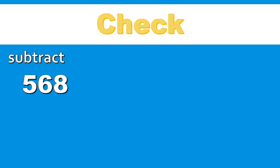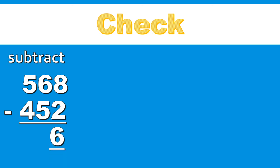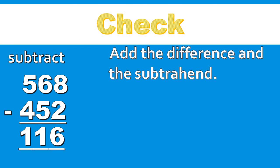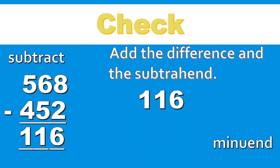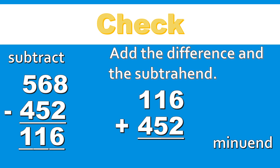Let's do another example. 568 subtract 452. 2 ones from 8 ones leaves 6 ones. 5 tens from 6 tens leaves 1 ten. 4 hundred from 5 hundred leaves 1 hundred. Our difference is 116. To do the check, add the difference and the subtrahend. 116 plus 452. 6 ones plus 2 ones is 8 ones. 1 ten plus 5 tens is 6 tens. 1 hundred plus 4 hundred is 5 hundred. So we got back our minuend, 568. So we know that our subtraction problem is correct.